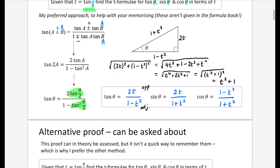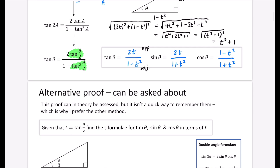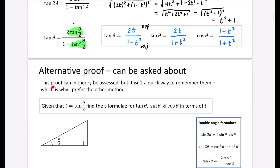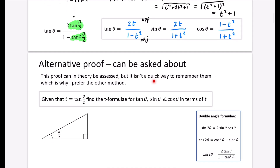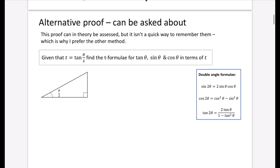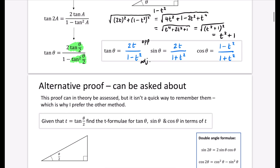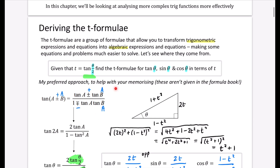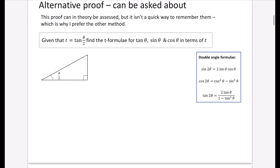So let's have a look at this alternative proof, which in theory you can be asked about. This proof can in theory be assessed, but it isn't a quick way to remember the formulae, which is why I prefer the other method. This is the full way the book goes about it — it's a proof, but it doesn't offer a quick way to help you come up with these three things.